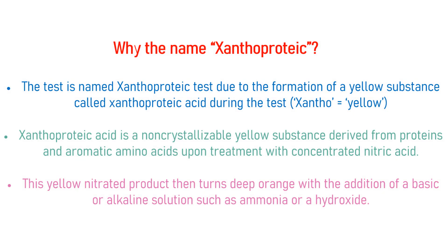The test is named Xanthoproteic due to the formation of a yellow substance called Xanthoproteic acid during the test. Xanthoproteic acid is a non-crystallizable yellow substance derived from proteins and aromatic amino acids upon treatment with concentrated nitric acid. This yellow nitrated product then turns deep orange with the addition of a basic or alkaline solution such as ammonia or a hydroxide.